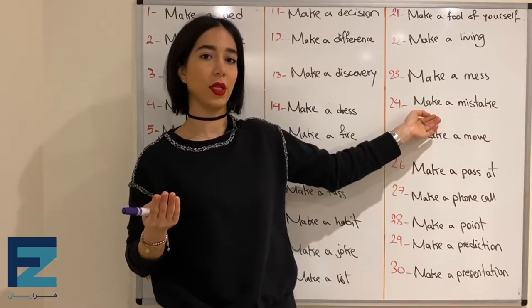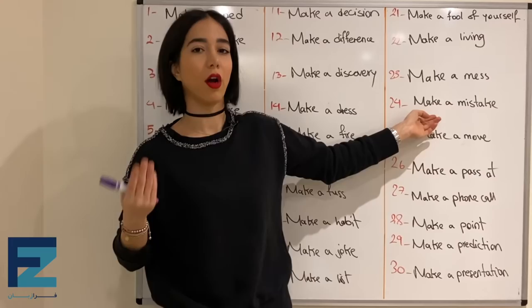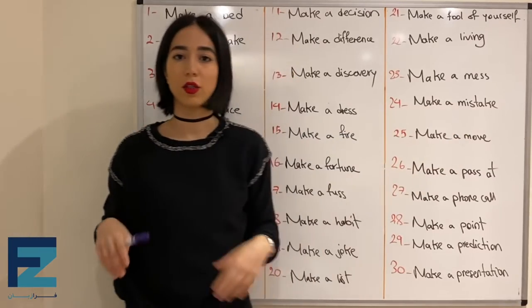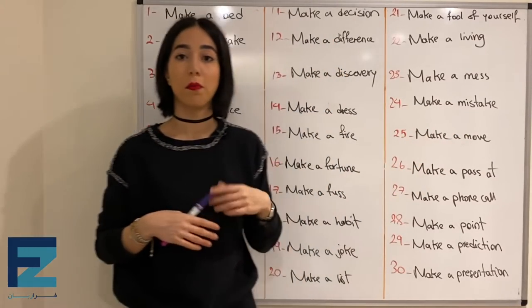Number twenty-four: make a mistake — to do something wrong or to have mistakes in something. یه کار رو اشتباه انجام دادن — اشتباه کردن.